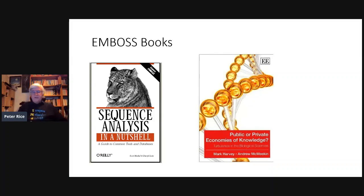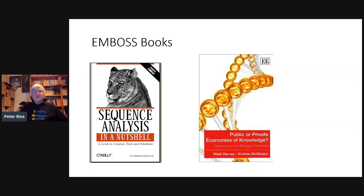A couple of other books came out as well. Sequence Analysis in a Nutshell was written by two guys at Lion Bioscience, and at the back of the book as a joke they added the EMBOSS application that does not exist. We then wrote that application — it predicts what happens when you use a sequence as a target for drug development. The other book, Public or Private Economies of Knowledge, actually featured a large section on the story of how EMBOSS came to be developed as an open source project.